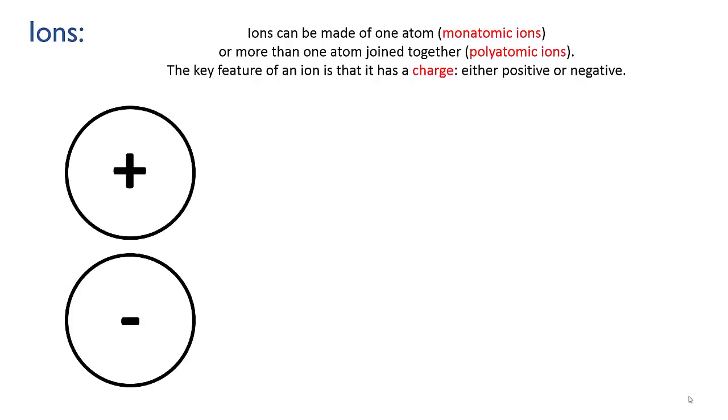First of all a bit of vocabulary. If an ion is just a single atom we call it a monatomic ion. This comes with the suffix mono meaning one. And if it's made from more than one atom joined together we call it a polyatomic ion because poly means many.